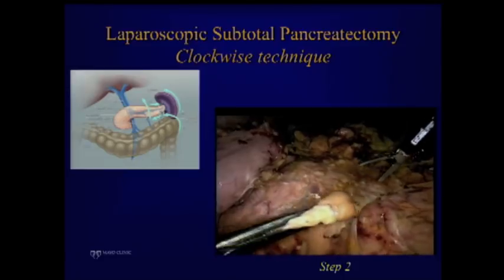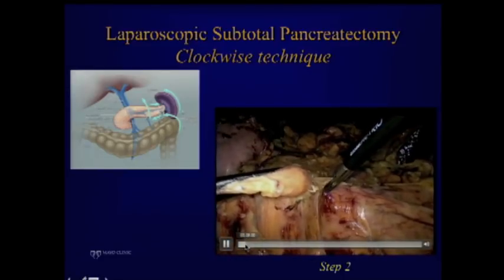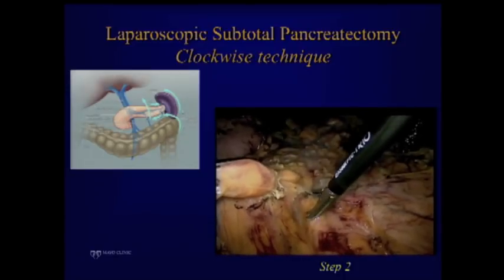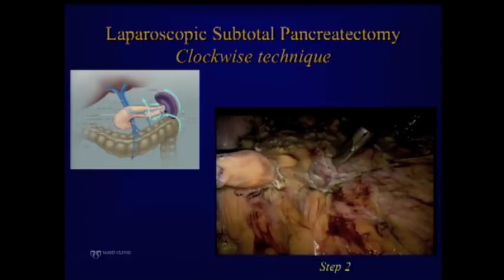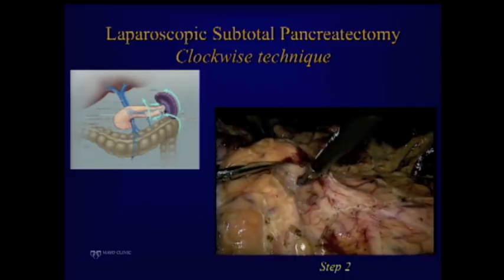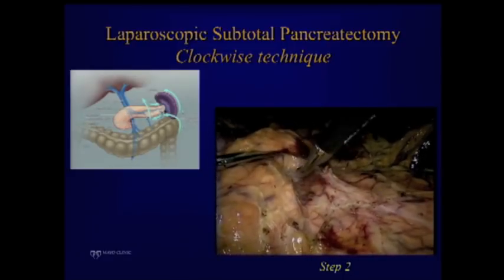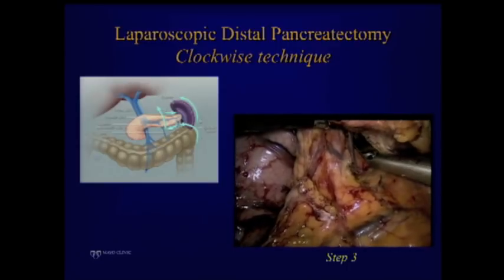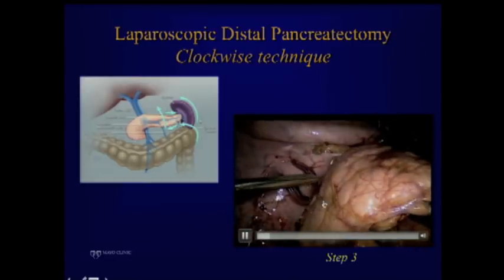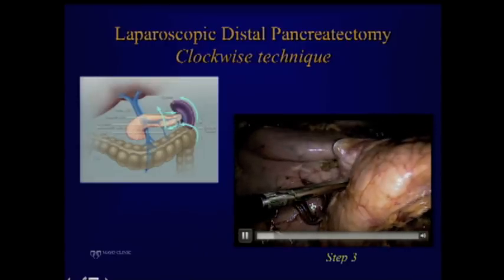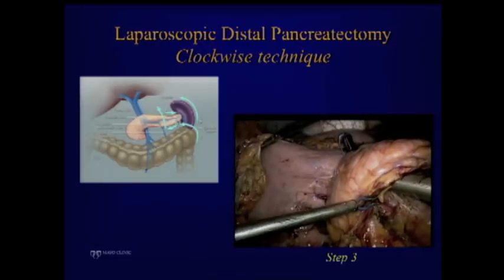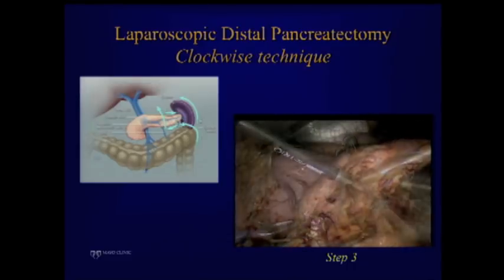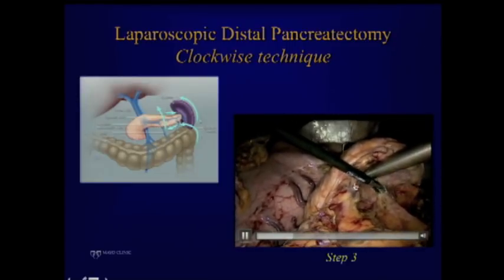Then you go along the inferior edge of the pancreas. You can choose how close to the inferior edge based on whether it's cancer or not. You follow the inferior edge from left to right down to where you want to divide it. For a distal pancreatectomy, you lift the pancreas and go around with the finger retractor. Contrary to what many authors say about needing to separate the artery, for a distal pancreatectomy away from the celiac trunk we include the artery within the specimen and apply the stapler.